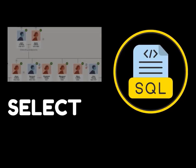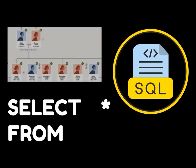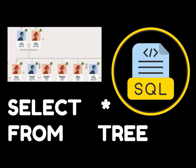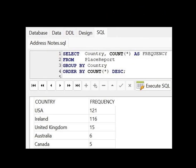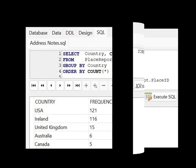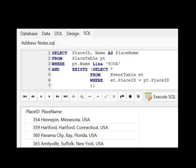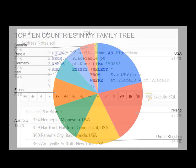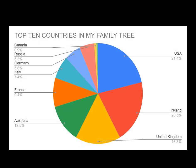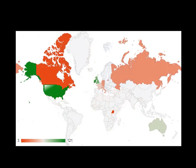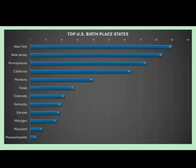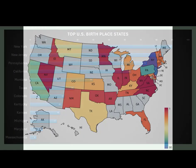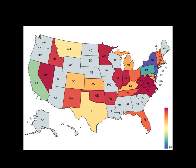This tutorial is for you if you know some basic SQL and you have a family tree online or in a desktop application. I'll show you how to create frequency reports from the place names in your family tree. We'll start with exploring your tree data, then do some cleaning and standardizing of place names, prepare frequency data, and then use some free tools to generate fantastic geographic charts.